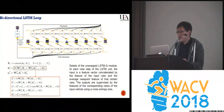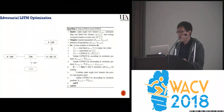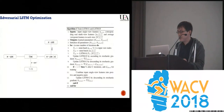The outputs are supervised by the features of the corresponding views of the input vehicle using cross-entropy loss. Our training architecture is inspired by the conditional GAN. We provide noise in the form of dropouts on vehicle feature embedding as inputs for the generative net. To make the inferred hidden view features as close as possible to the real multi-view features, we designed LSTM-D to discriminate real or inferred features for adversarial training.